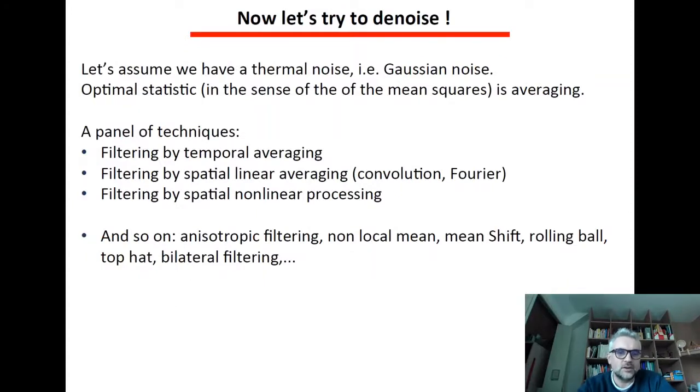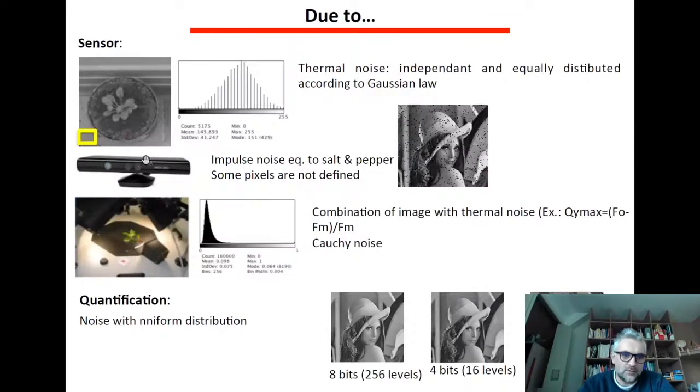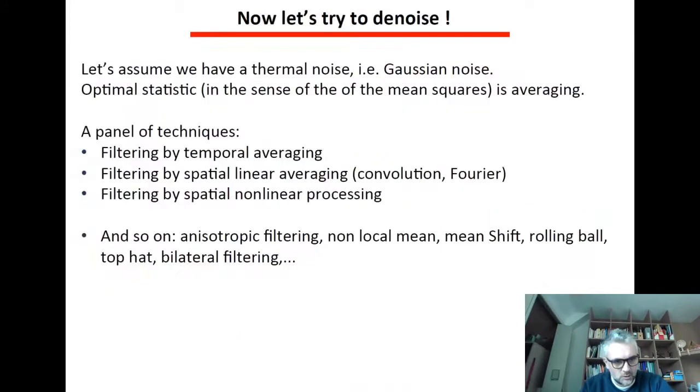Now let's try to denoise, remove this noise, and we will focus on the most ubiquitous situation where we have thermal noise. So the situation where in a flat part of the image, if you have a histogram on only this part, you will see that you have something which is flattened and distributed along Gaussian noise.